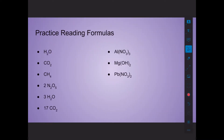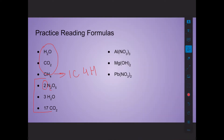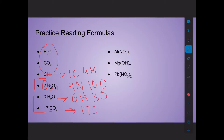Here's some practice reading formulas. For CH4, we have one carbon and four hydrogens. When we get to formulas with big numbers in the front, those are called coefficients, and they apply to every single thing they're in front of. So instead of two nitrogens and five oxygens, with a coefficient of two you actually have four nitrogens and ten oxygens. Similarly, you'd have six hydrogens and three oxygens, or 17 carbons and 34 oxygens. Think of it like the distributive property in algebra.